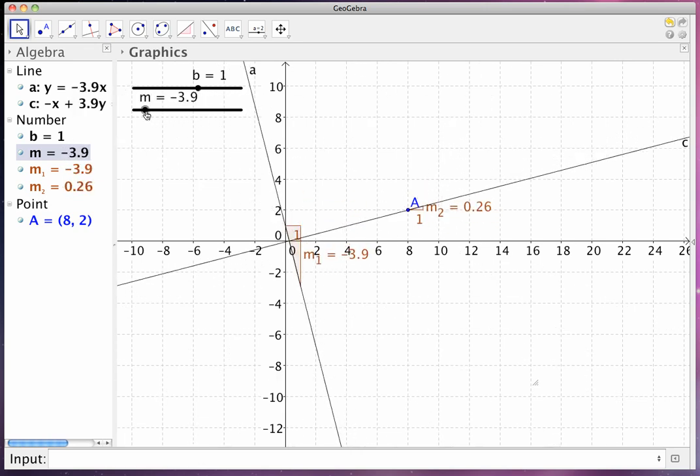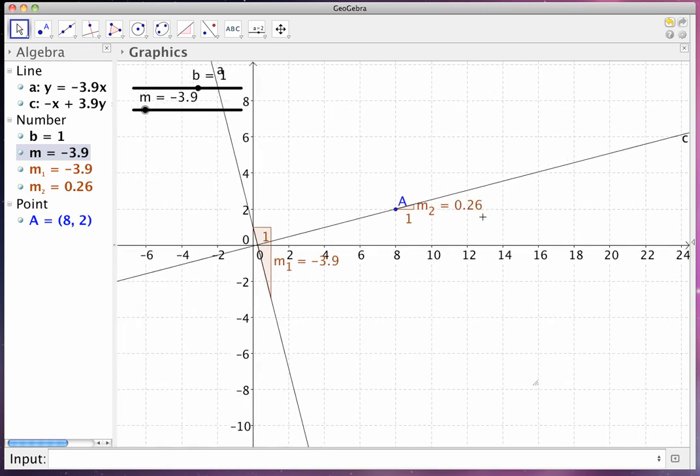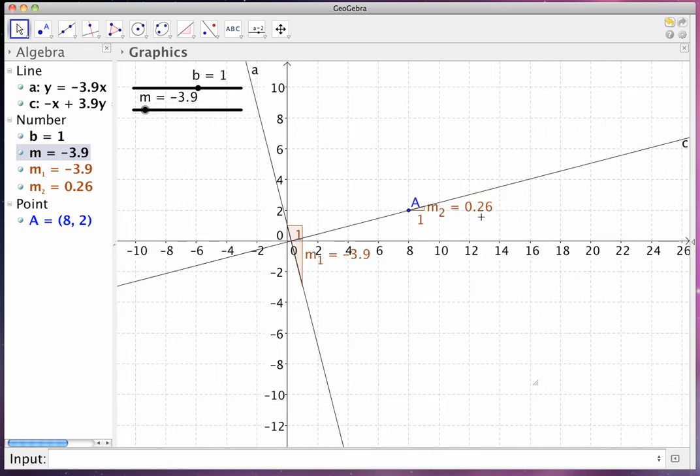So you have a slope of negative 3.9, for example, and the other one has a slope of 0.26. And what I intend to do is have students take out their calculators and multiply the two numbers and see if they get negative 1. And then you can also have a discussion with students, hey, what does it mean if you got negative 1.001? So you can have that discussion with students.